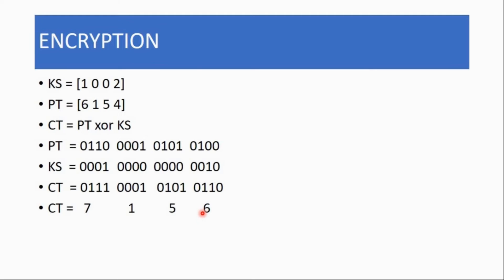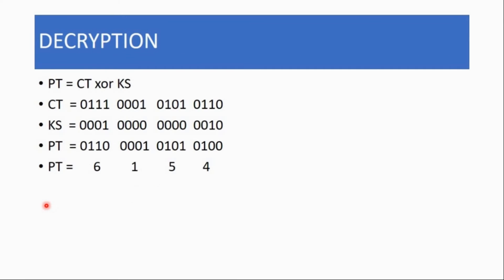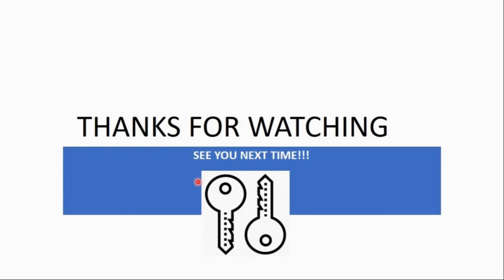In a real cryptosystem, you'd get a proper ciphertext that can be decoded back to text — this is just a simplified version. For decryption, you XOR the ciphertext with the keystream, and you arrive back at the original plaintext which is 6154. In the actual cryptosystem you loop through 255 times and are able to convert real messages into ciphertext. Thanks for watching — comment below, like it if you enjoyed it, and if you have any complaints write them down below.